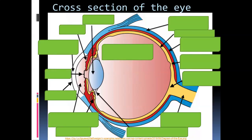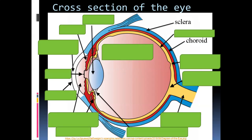Looking at a cross section of the eye, there are a number of different labels. The outermost part — shown in light blue but white in reality — is known as the sclera. Underneath that is a layer known as the choroid. Be careful not to mix this up with the chorion from reproduction — they refer to something completely different. The innermost layer, which is the receptor, is known as the retina. So the order is: sclera, then choroid, then retina as the innermost layer.